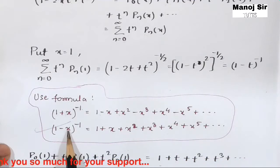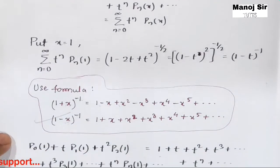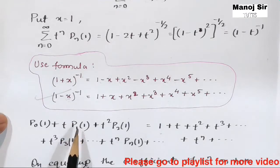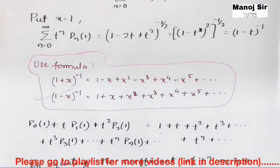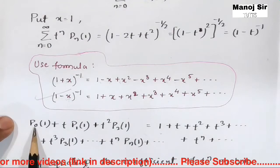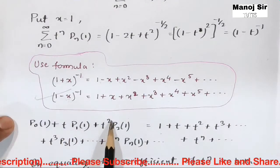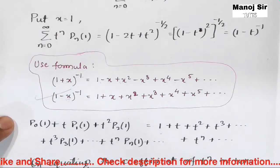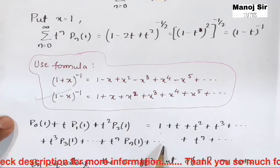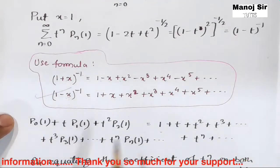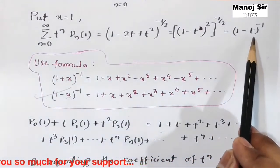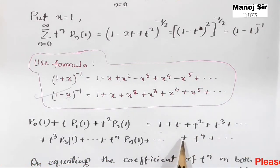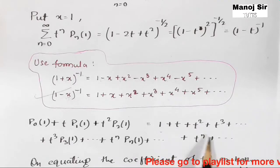We will use the formula (1-x)^(-1) = 1 + x + x² + ..., where here x is T. So the left-hand side, P_0(1) + T·P_1(1) + T²·P_2(1) + T³·P_3(1) + ... + T^n·P_n(1) + ... , and the right-hand side (1-T)^(-1) expands to 1 + T + T² + T³ + ... + T^n + ...